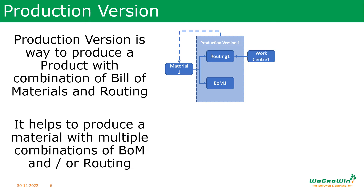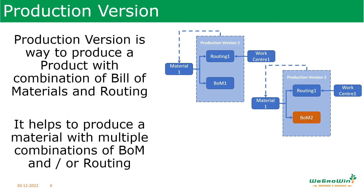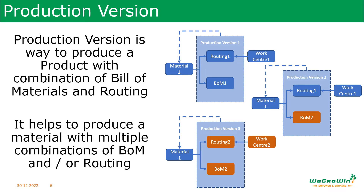For example, a material may have one routing but multiple bill of materials — in that case we need a production version. Or a material may have multiple BOMs but one routing — again we need a production version. For example, there is a material with one routing and one BOM linked to a work center, so we have one production version. The same material may be produced with the same routing but a different BOM, so we need a second production version. Or it may be produced with a different routing and a different BOM, requiring yet another production version.